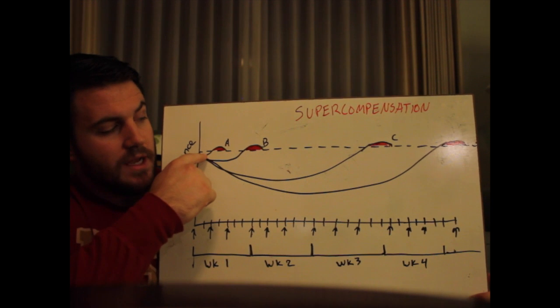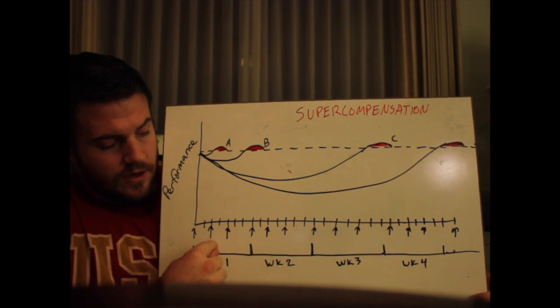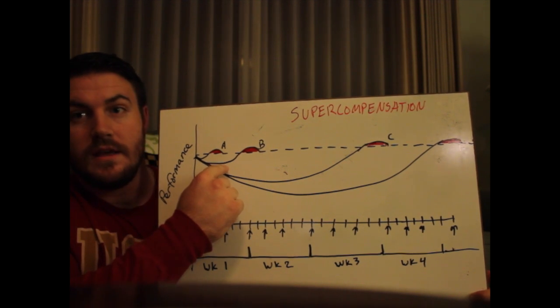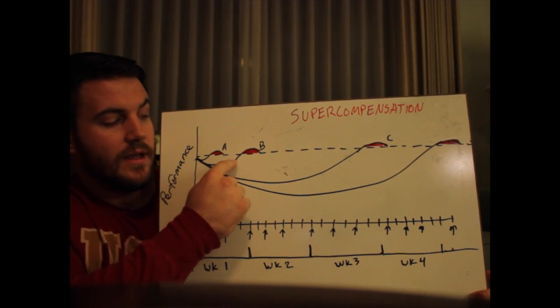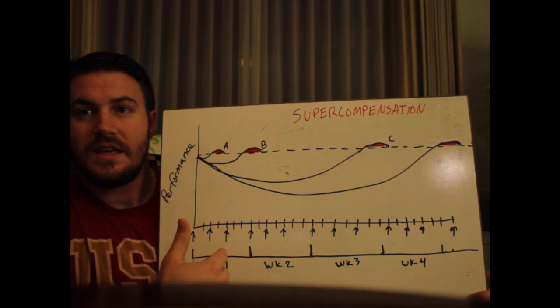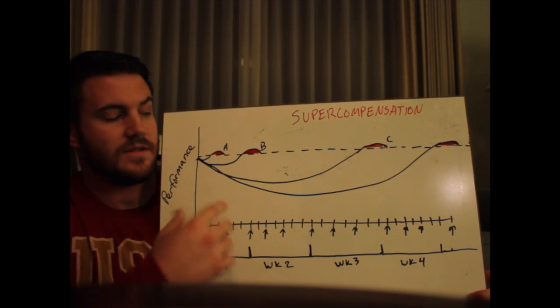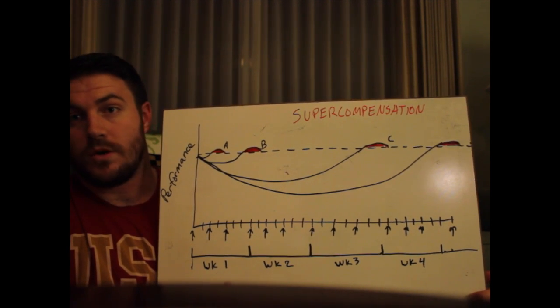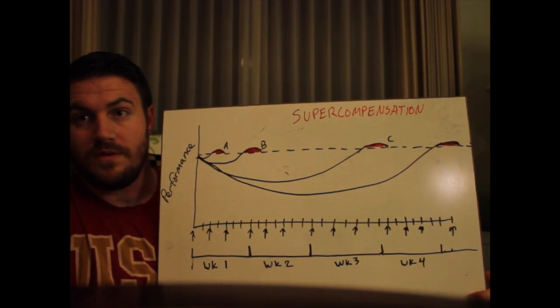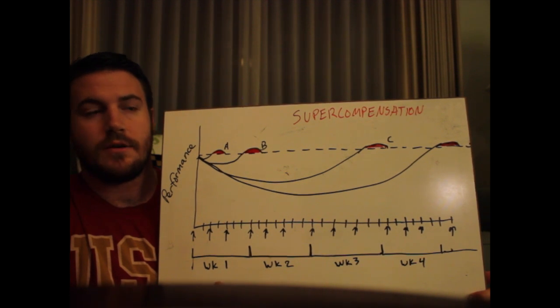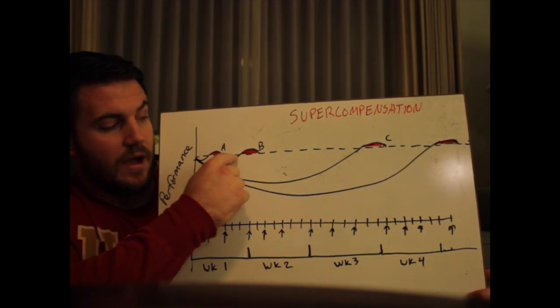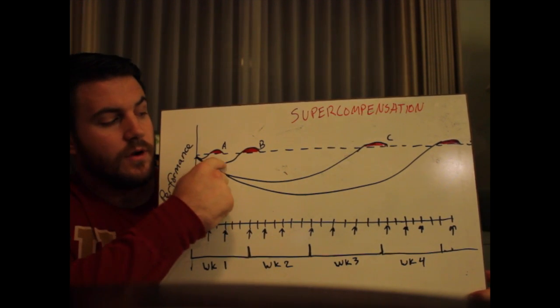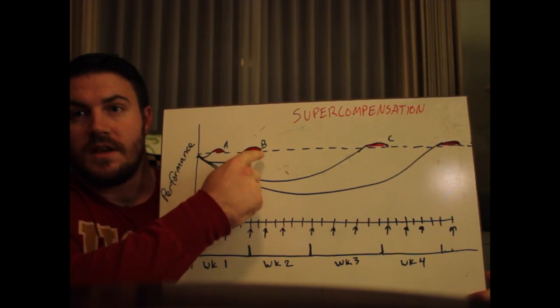Compare that with the intermediate lifter, who has a number of overload events that cause fatigue that must be adapted to by the body. They have to incur enough fatigue to actually disrupt homeostasis since their body is adapted to some disruption already. They're going to have to add more disruption, more overload events to get their body tired. That will bring them down, but as they taper their training and allow their body to recover, they will supercompensate as well.